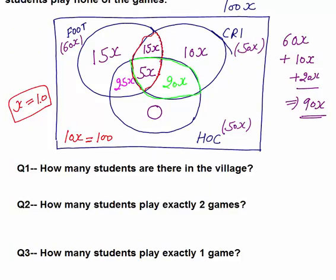Once we know x = 10, we can answer all questions. Question 1: How many students are there in the village? Total students = 100x = 100 × 10 = 1000 students.